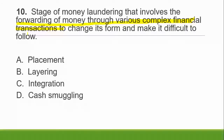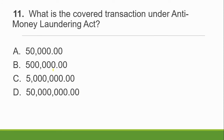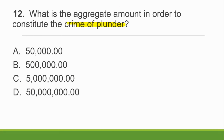Question 9 options were: A. By money laundering, the predicate crime must be proven. B. Yes, with money laundering because he cannot justify his wealth. C. Yes, with money laundering and another predicate crime. The answer is C — money laundering, because he cannot explain his wealth. Question 10: What stage of money laundering involves forwarding money through various complex financial transactions to change its form and make it difficult to follow? A. Placement, B. Layering, C. Integration, D. Cash smuggling. The answer is layering — layering involves complex financial transactions. Note: there was a typographical error in the choices but layering is the correct answer.